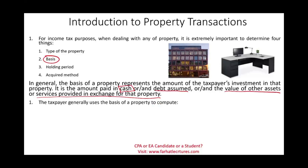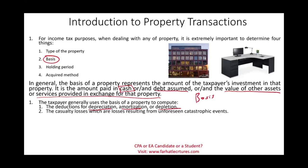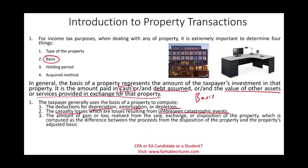Why do we have to learn about the basis? The basis is important in many different ways. First, to compute depreciation, amortization, or depletion for an asset, you need to know the basis — there is no way to compute those without it. Second, if you have any casualty loss — losses resulting from unforeseen catastrophic events — you need to determine your basis in order to determine your loss. Third, the amount of gain or loss realized from the sale, exchange, or disposition of the property requires knowing the basis. When you sell, exchange, or dispose of property, you need to compute whether you have a gain or a loss, and you cannot do that without knowing the basis.